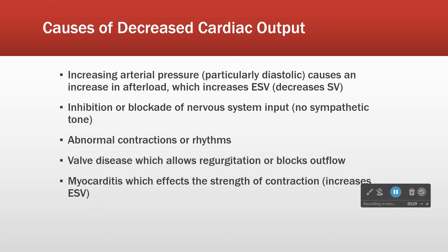Even abnormal patterns that result in increased cardiac stimulation, like supraventricular tachycardia where the heart beats way too fast — the faster the heart beats, the lower the filling time, the smaller the EDV, the less stroke volume, and less cardiac output. So almost across the board, abnormal rhythms decrease cardiac output.